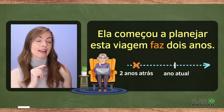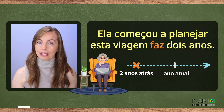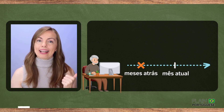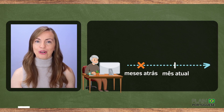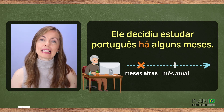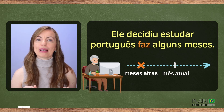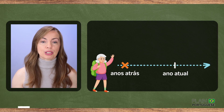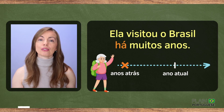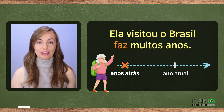Notice that both há and faz are invariable when used to indicate how long ago something happened. Some other examples: because they are coming to Brazil, he decided to learn Portuguese a few months ago — Ele decidiu estudar português há alguns meses, or faz alguns meses. She visited Brazil many years ago — Ela visitou o Brasil há muitos anos, or faz muitos anos.